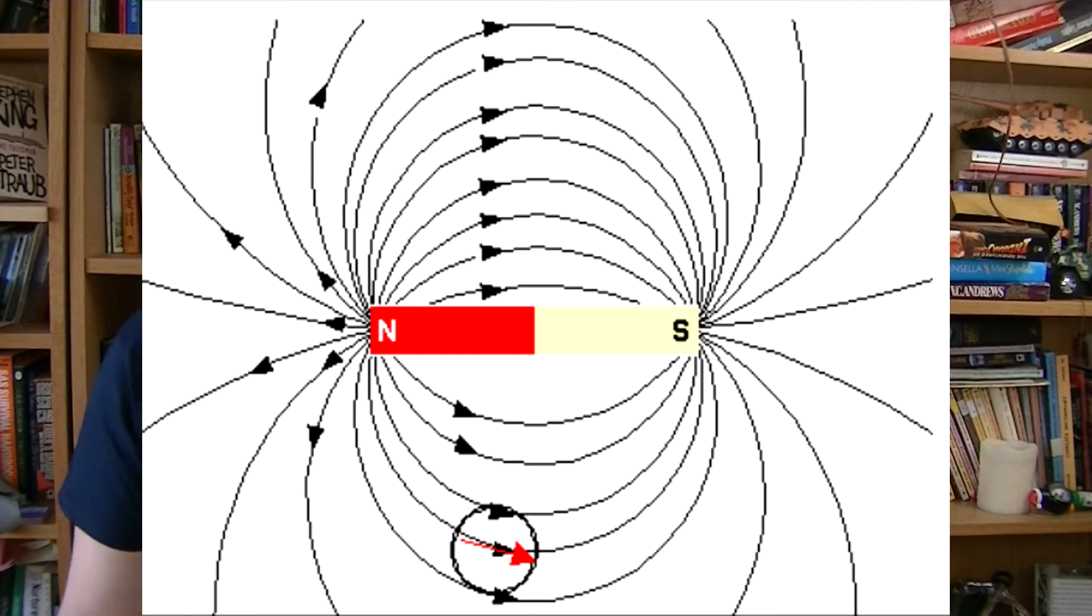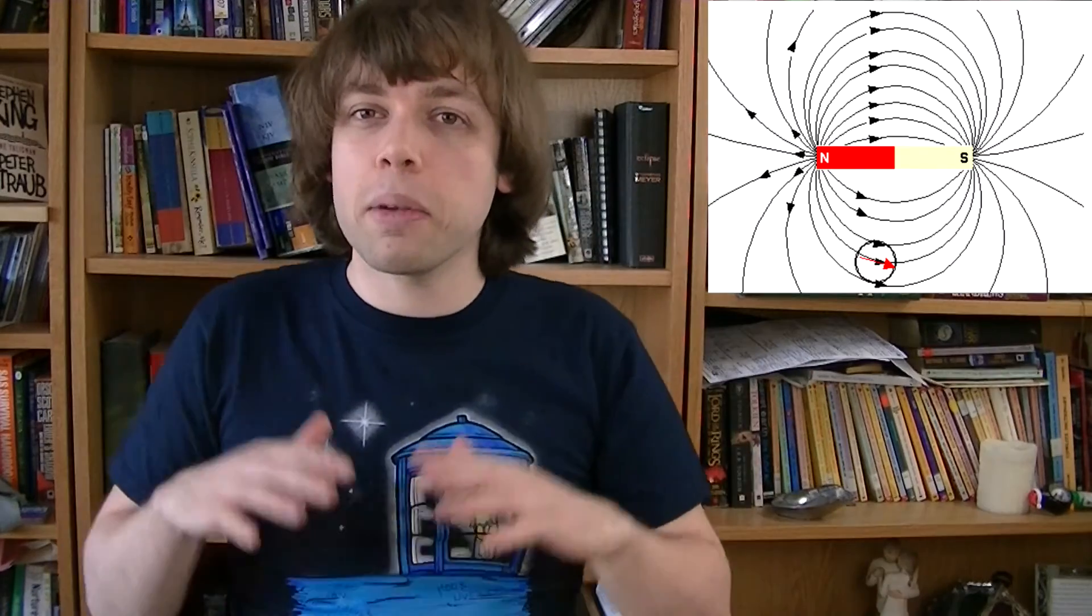And this fact was actually staring at you in the face in an earlier video. Let's look again at the magnetic field produced by a regular bar magnet. The field lines point towards the south pole, so the compass needle will follow the field lines and also point towards the south pole. So that means if your compass points north, that can't be the actual magnetic north pole.